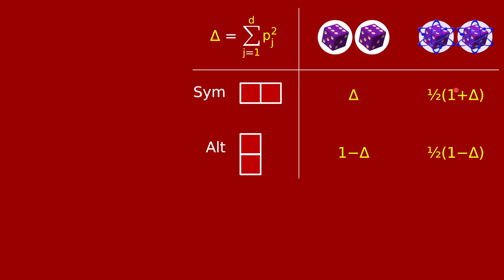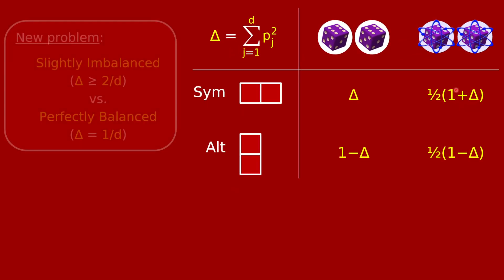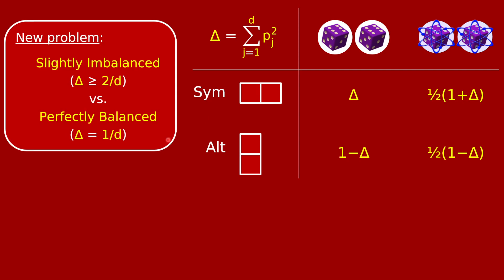Now I want to make the task a little bit trickier — a harder statistics problem. The new problem: your die, be it classical or quantum, is in one of two cases: either perfectly balanced or slightly imbalanced. Perfectly balanced means the distribution is uniform on the D faces, all p_j's are 1/d, and delta equals 1/d. Slightly imbalanced means delta is bigger than the minimum 1/d by a factor of at least two.